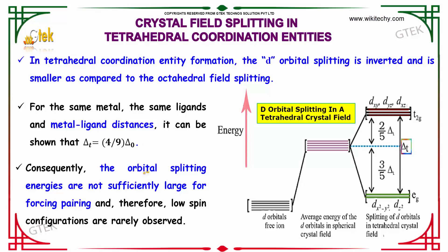Consequently, the field and the orbital splitting energies are not sufficiently large for forcing pairing, and therefore low spin configurations are rarely observed.